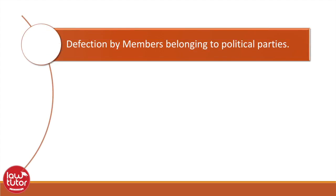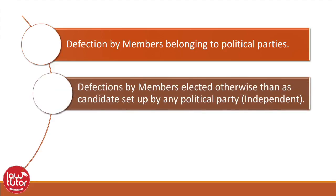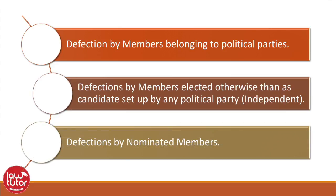The 52nd Amendment, also known as the anti-defection law, explains how three kinds of members of legislature can defect. It talks about defection by members belonging to political parties, defections by members elected otherwise than as a candidate set up by any political party — i.e., independent members — and defections by nominated members. Now let's discuss each kind of defection.